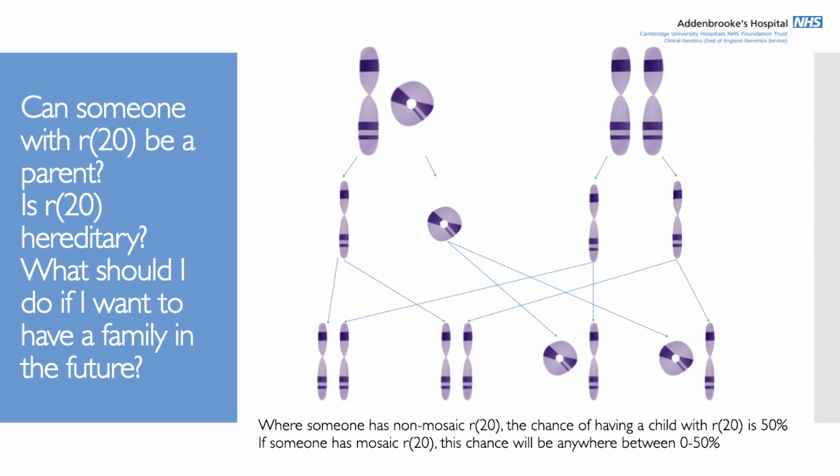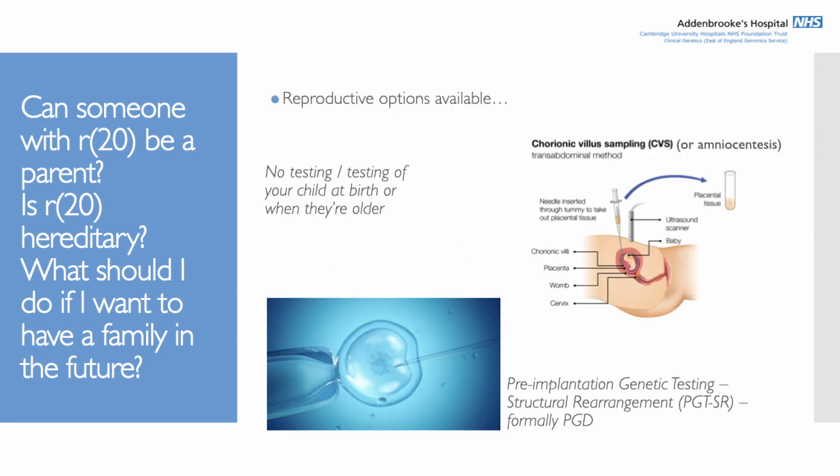There are several reproductive options available. One perfectly reasonable option is to do nothing — for non-mosaic cases knowing there's a 50% chance, or for mosaic cases knowing it's somewhere up to 50% — and the child can have testing at birth or when older to see if they have ring 20. It's also possible to test during a pregnancy by looking at the baby's chromosomes. There's also pre-implantation genetic testing, formerly called PGD, where eggs and sperm are fertilised outside the body via IVF, the embryos are tested, and only embryos with typical chromosome 20 arrangements are used.